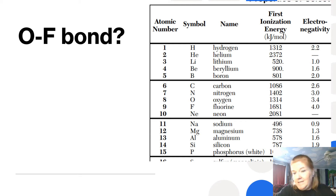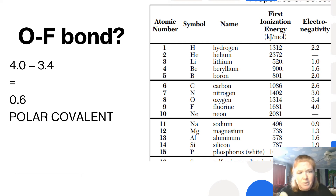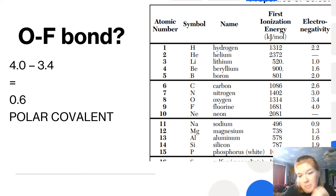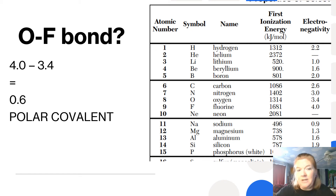What about O and F? Let's do the subtraction and we get 0.6. This is also polar covalent, but the difference is a little less, so this bond is going to be less polar. Remember, in polar covalent bonding, electrons are shared unequally — they're pulled toward the atom with the higher electronegativity, in this case fluorine.